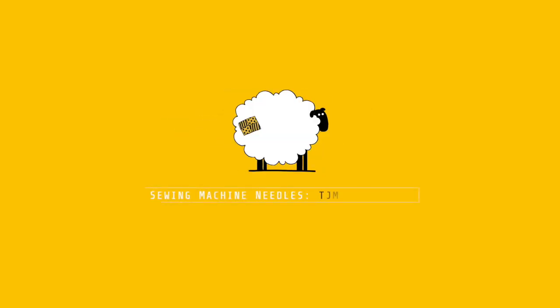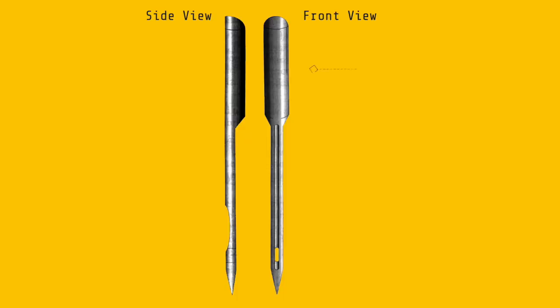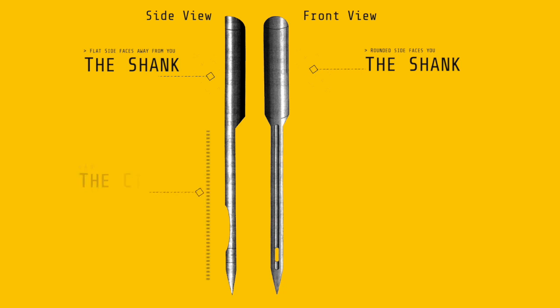Let's take a closer look at a sewing machine needle. At the top you have the shank. One side is rounded, the other side is flat. The flat side always goes away from you when putting in a new sewing machine needle. You then have the shaft of the needle.